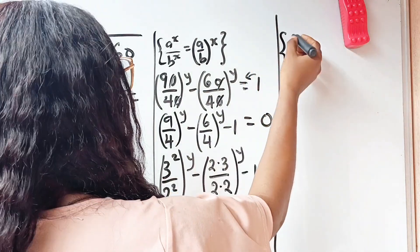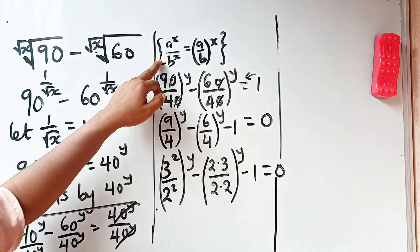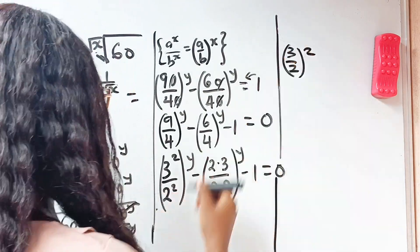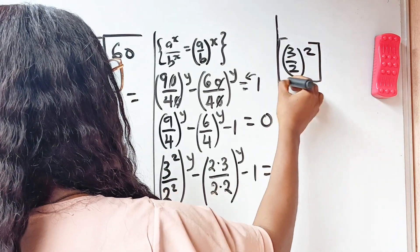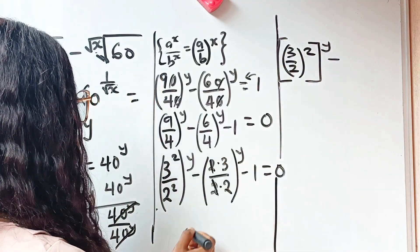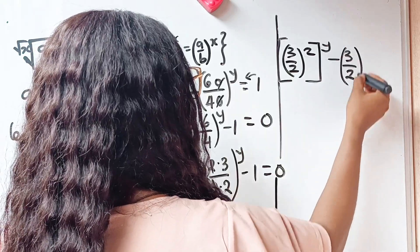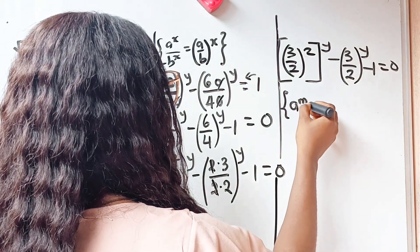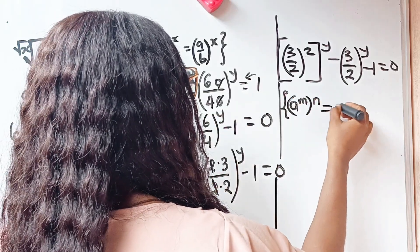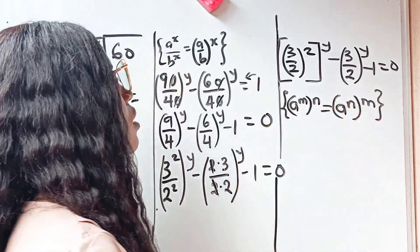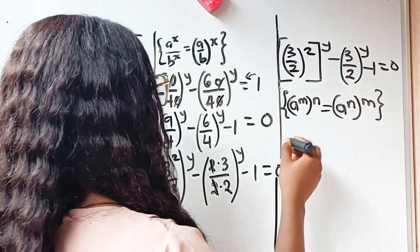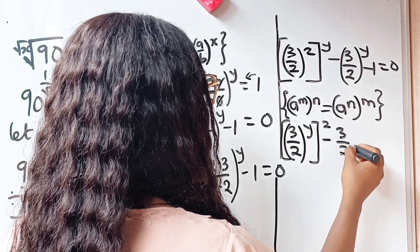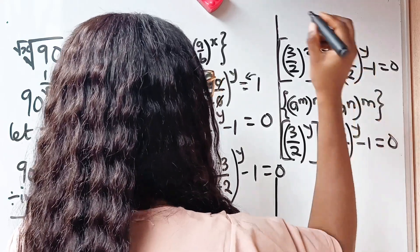Using the rule a^x, we can write 3 over 2 raised to the power of 1, raised to the power of 2y. For the second term, the 2s cancel and we get 3 over 2 to the power of y. Applying the rule that (a^m)^n equals (a^n)^m, we rewrite this as (3/2)^y all squared minus (3/2)^y minus 1 equals zero.